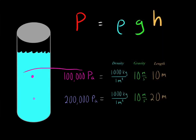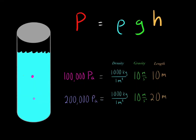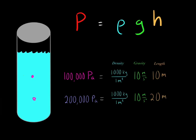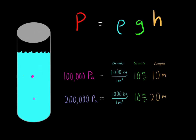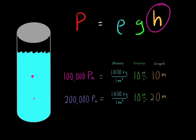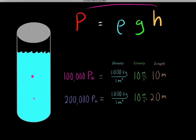So the pressure at the first point is 100,000 pascals, and the pressure at the second point is 200,000 pascals. This makes sense — the deeper you go in a liquid, the higher the pressure will be. At the first point we have 10 meters of water above applying pressure, while at the second point we have 20 meters. This is represented in the equation: the larger the height, the larger the pressure.